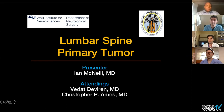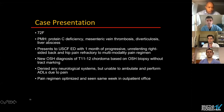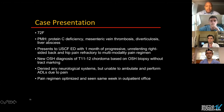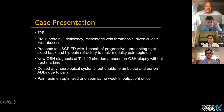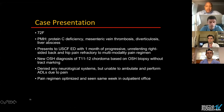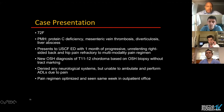Thank you, Dr. Theologis. So this is a case of a 72-year-old female with a history of protein C deficiency and prior mesenteric vein thrombosis on warfarin, who presented to our ED with one month of progressive, unrelenting, right-sided back and hip pain refractory to multiple medications including opiates. She had undergone a biopsy at an outside hospital about a month prior, received a diagnosis of chordoma, but had not undergone any further treatment. She had no neurological symptoms, but due to the pain, she was unable to ambulate and perform her ADLs.